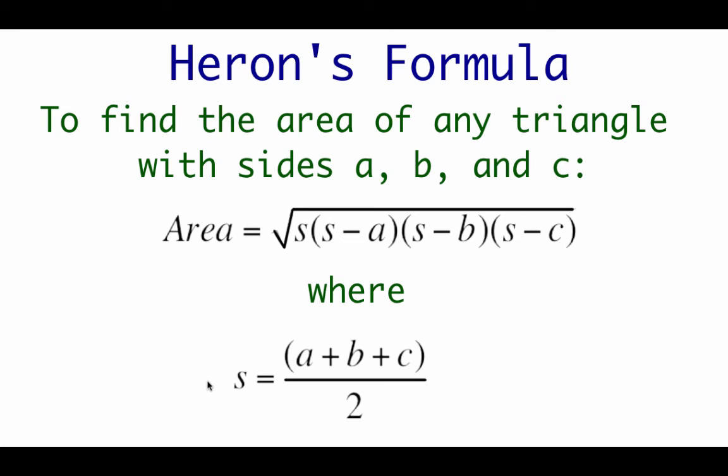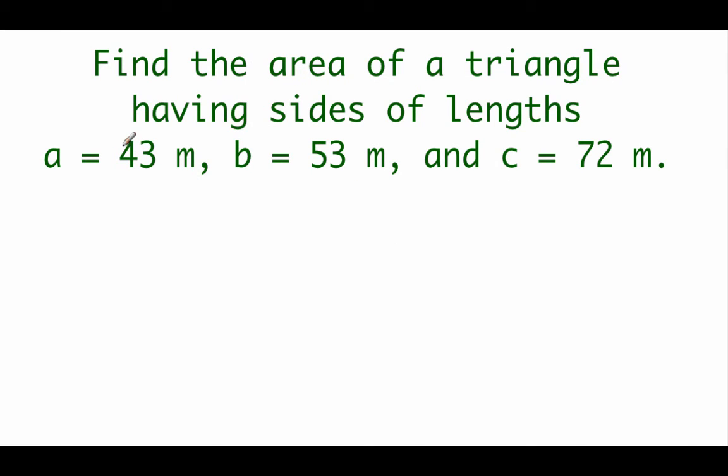That S value is called the semi-perimeter, so in order to find that, what we're going to do is add up the three sides and split it in half. So in this example, we've got side lengths of 43 meters, 53 meters, and 72 meters.